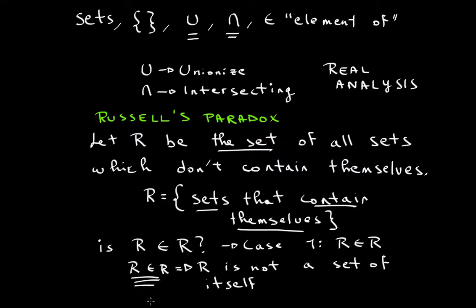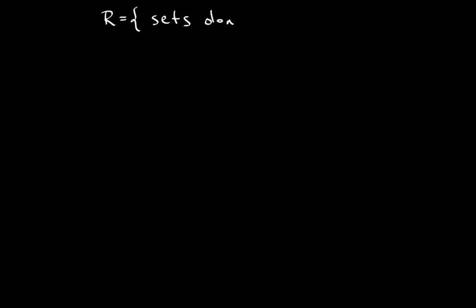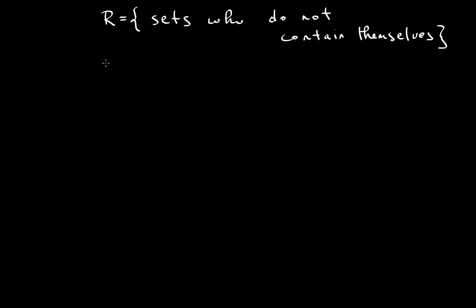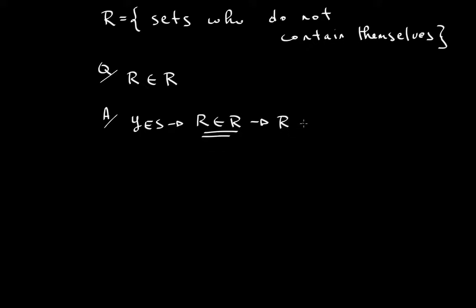If you're a little confused, let me rewrite this. R is the set of all sets that are not elements of themselves — sets that do not contain themselves. The question is: is R an element of R? If somebody says yes, that means R is an element of R, so R is inside the set which describes all sets who don't contain themselves.